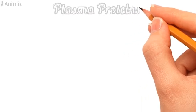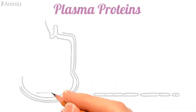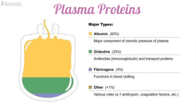Now let's see different types of plasma proteins. We have albumin, which helps in maintaining the osmotic pressure of the plasma. Then we have globulins like antibodies, which have a role in the defense mechanism, and transport proteins which help in transport of hormones and enzymes. We have fibrinogens which help in blood clotting. And we also have other proteins like alpha-1-antitrypsin and coagulation factors.